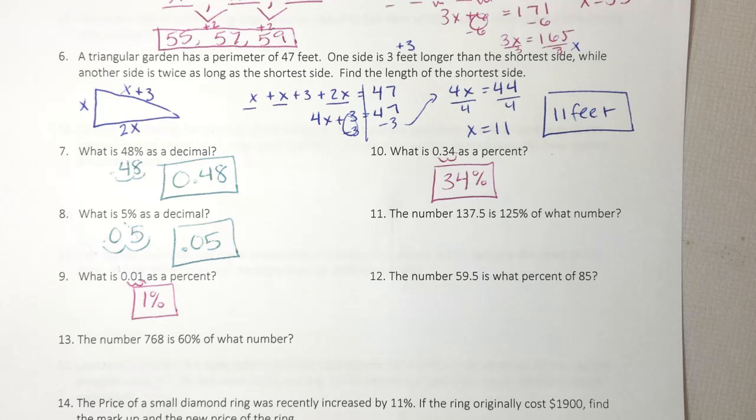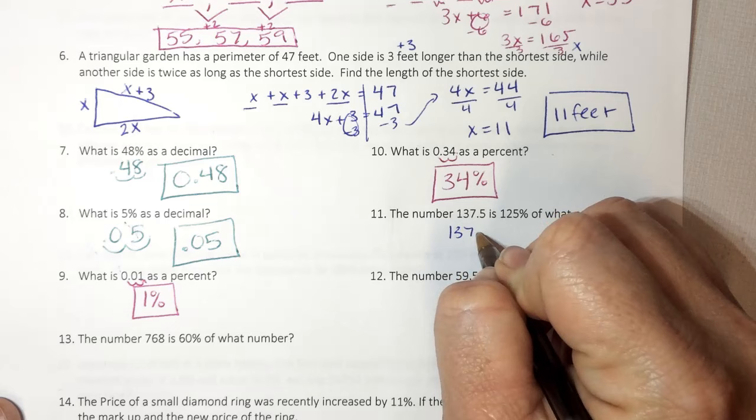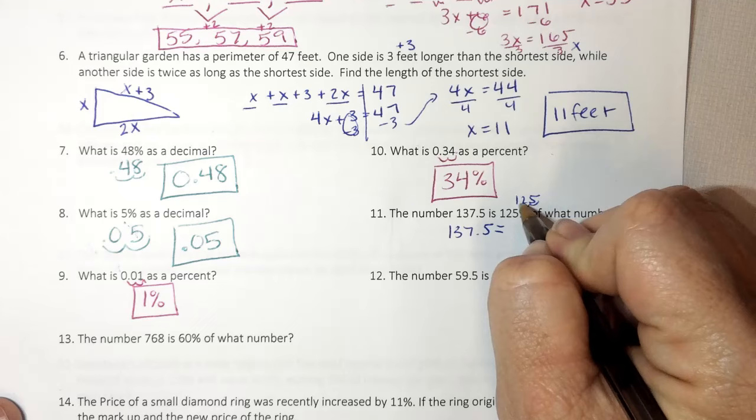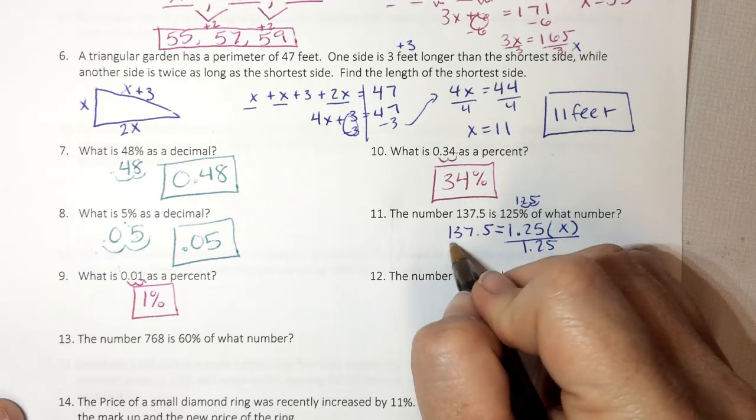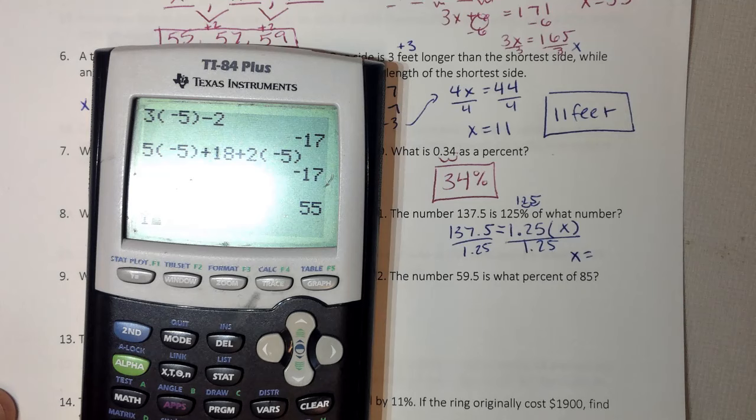Now these, read them as you go. So it says the number 137.5 is means equals now 125%. When I plug in percents, I have to turn them to decimals. So 1.25 of means multiply what number we don't know. So I'm going to divide both sides by 1.25 to get x by itself. And I see 137.5 divided by 1.25. I get x equals 110.